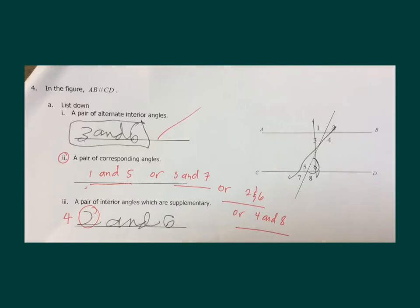Next is the idea on alternate interior angles, corresponding angles, and interior angles that are supplementary. You're correct to say that 3 and 6 are alternate interior angles — that's one example, because there are also other alternate interior angles. But it seems you're not sure how to identify corresponding angles.